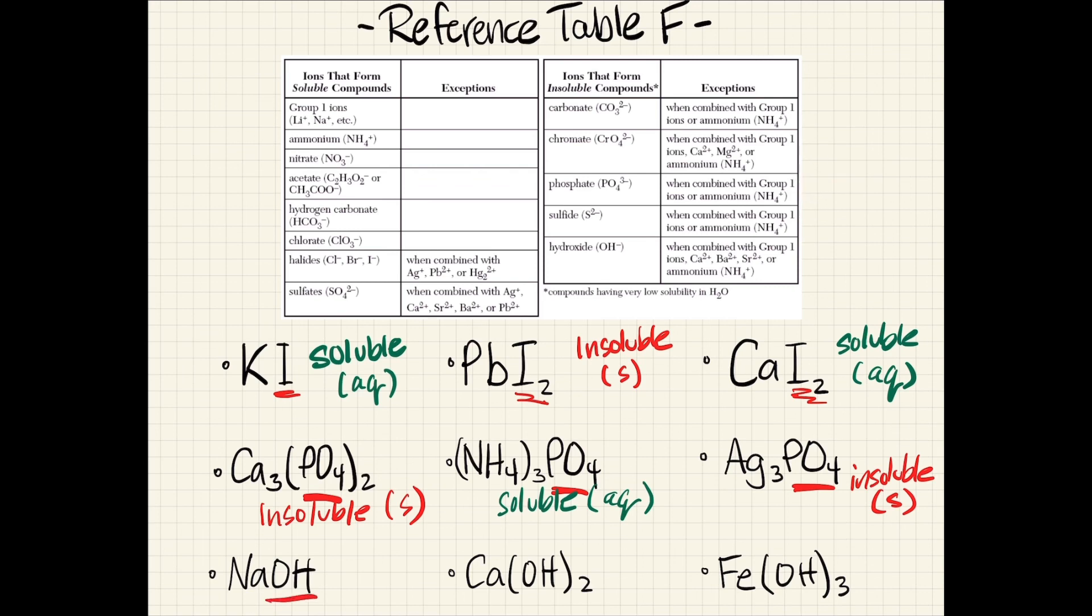Our last group is going to be the hydroxides. All hydroxides are insoluble. However, the exceptions are with group 1 ions, calcium, barium, strontium, and ammonium.